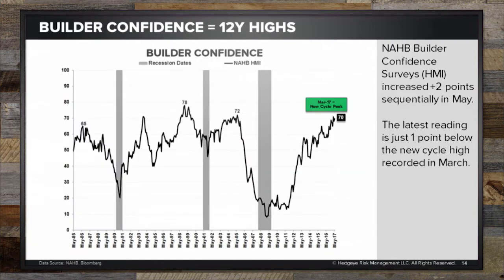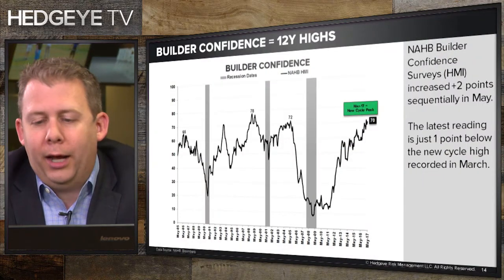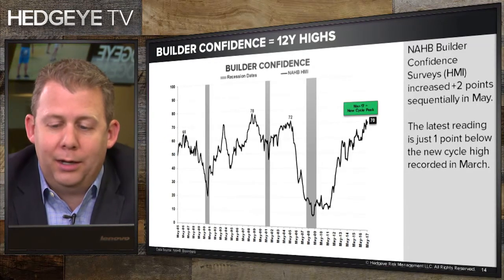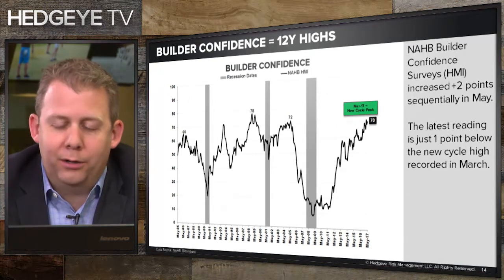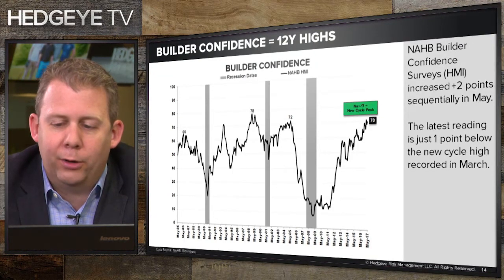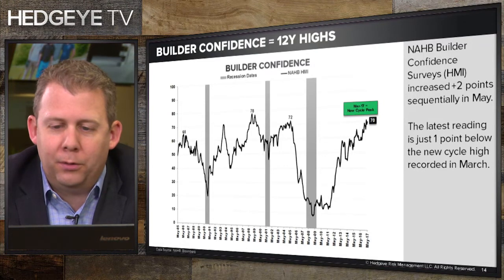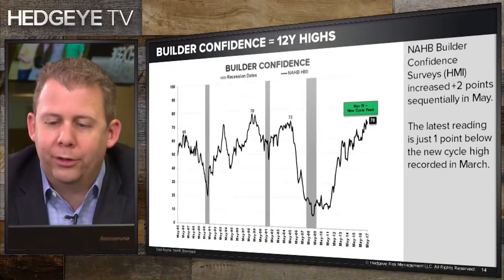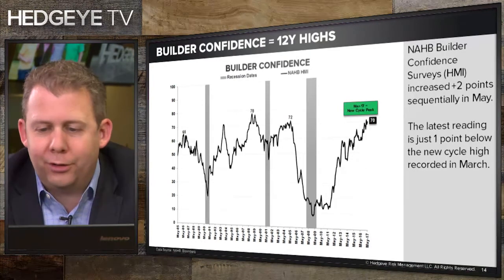Slide 13 shows builder confidence — a survey of builders asking about current traffic, current sales, and expectations for sales six months out, melded into the Housing Market Index or HMI, a monthly survey from the National Association of Home Builders. We're at a new cycle peak of 70. It may be a little disconcerting that builder optimism is back at levels where prior cycles have peaked, but there's still clearly a lot of upside relative to downside based on the amount of new construction taking place.